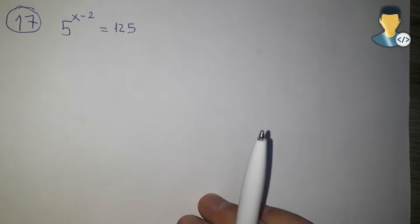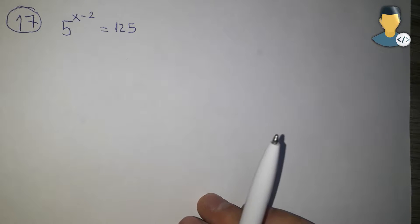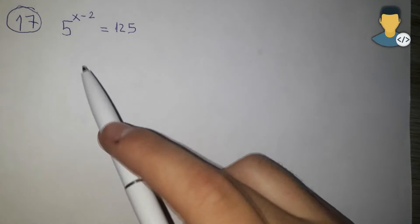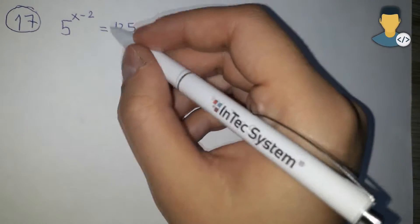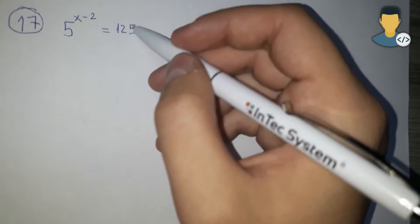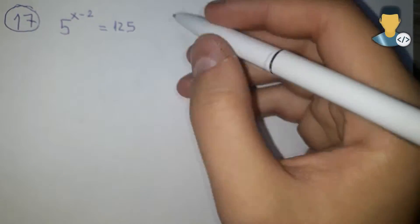We are back, the 17th exercise on the series of exponential equations. Here we have the exercise 5 to the x minus 2 is equal to 125. So as we did on previous exercises, if you watched them, we'll do the same here.